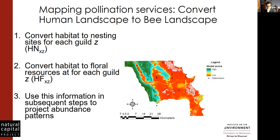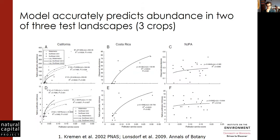We can predict, based on the surroundings of each of those nest sites, how many bees might be visited. I emphasize this is a relative score — we don't know exactly how many bees are out there. So it's a relative score from zero to one. We call that a pollination service score.